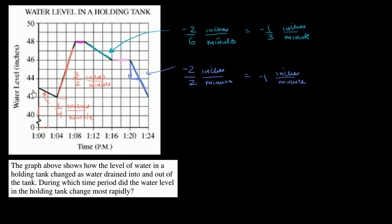And everywhere else, it's negative one fourths. This is one and a half inches per minute. Then we go to negative one third, then we go to negative one. So the largest rate of change is right over here.